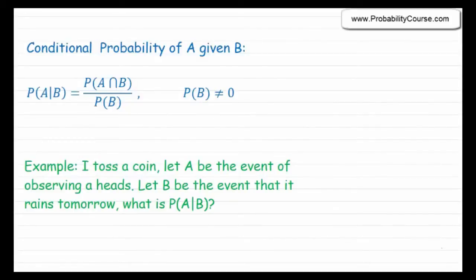Hello. In this video I would like to talk about independent events. Remember that the conditional probability of A given B is given by the probability of A and B divided by the probability of B. This is the probability of A given that we know event B has already occurred.